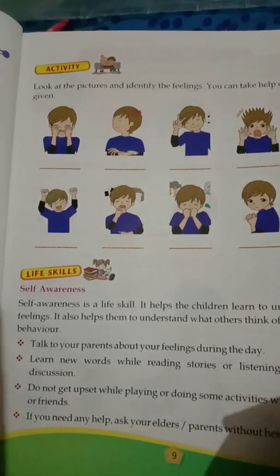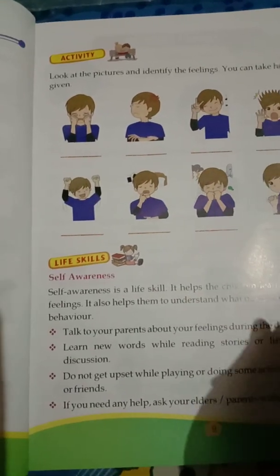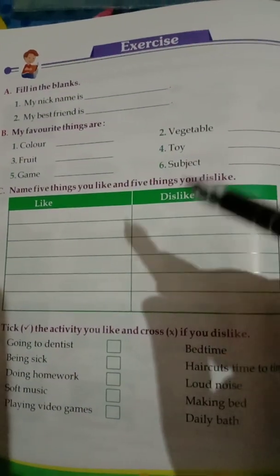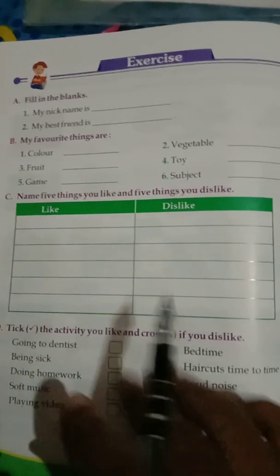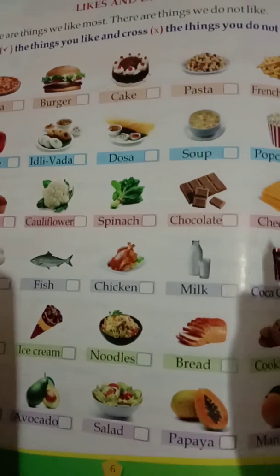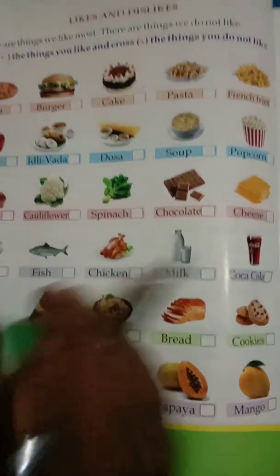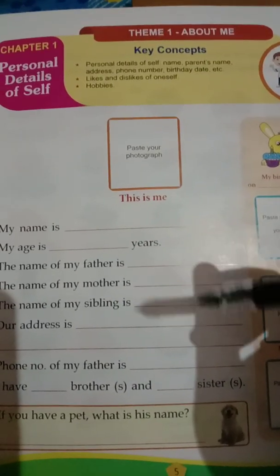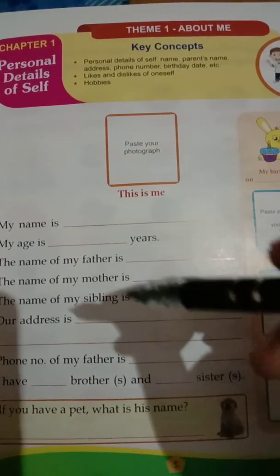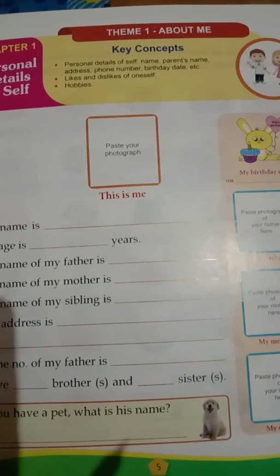So this chapter is completed. You have to write this in your Environmental Science copy and learn it. You have to do the exercises in the book, and write this in your Environmental Science class copy. Okay? These are your homework. So students, bye bye.